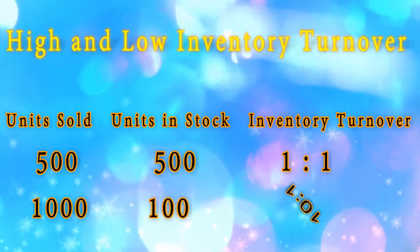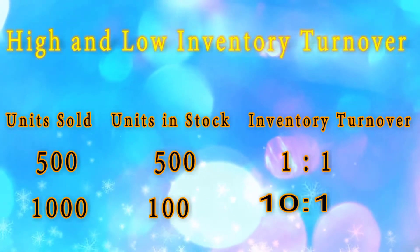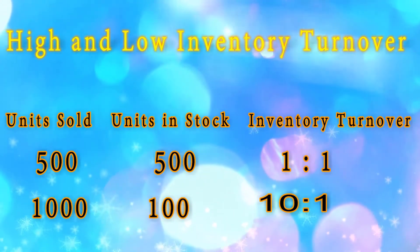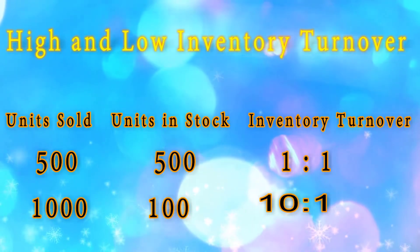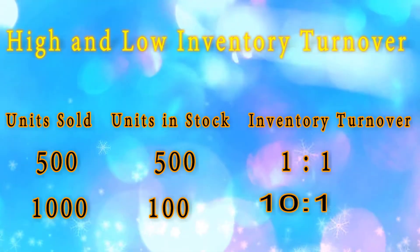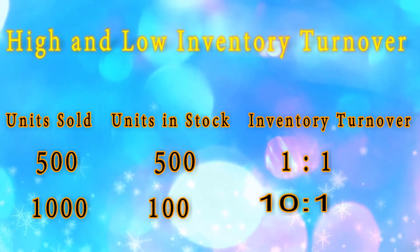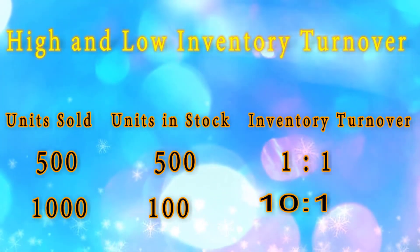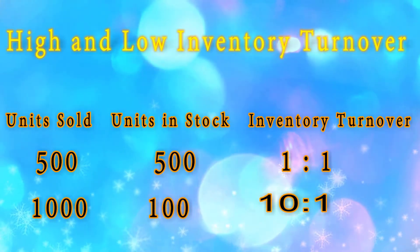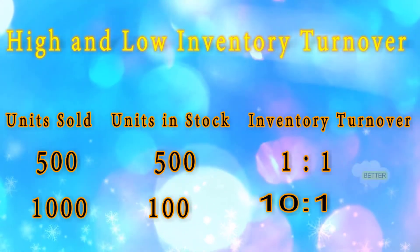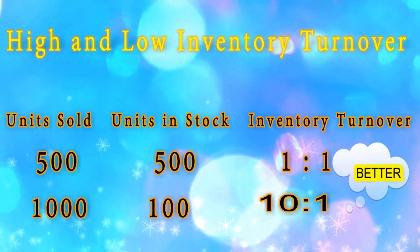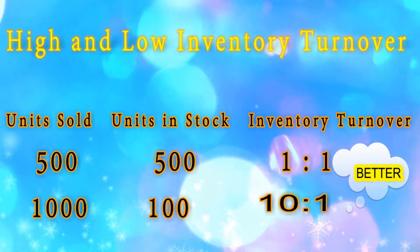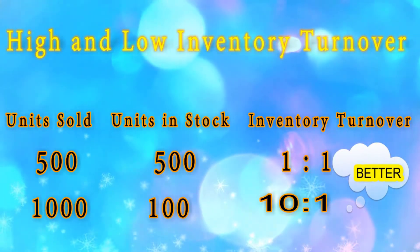If you sold a total of 1,000 units and still had 100 units in stock on average, your inventory turnover ratio would be 10. To achieve this, you must have purchased a lot of stock during the year, probably on multiple occasions. Your inventory turnover ratio is just one number, but it gives a good indication of how well stock is flowing through the business during the year.